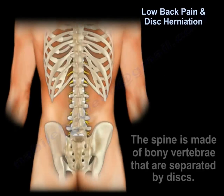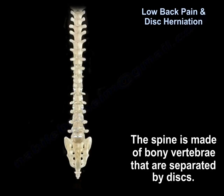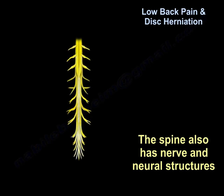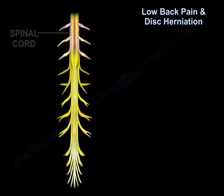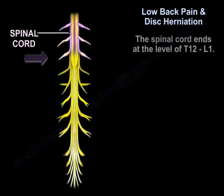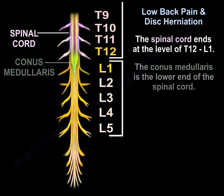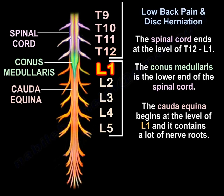Low back pain and disc herniation. The spine is made of bony vertebrae that are separated by discs. The spine also has nerve and neural structures. Here you can find the spinal cord that ends at the level of T12-L1, the conus medullaris which is the lower end of the spinal cord, and you can also find the cauda equina, which is a lot of nerve roots beginning at the level of L1.